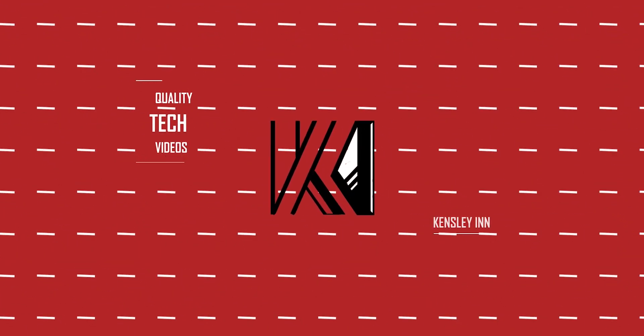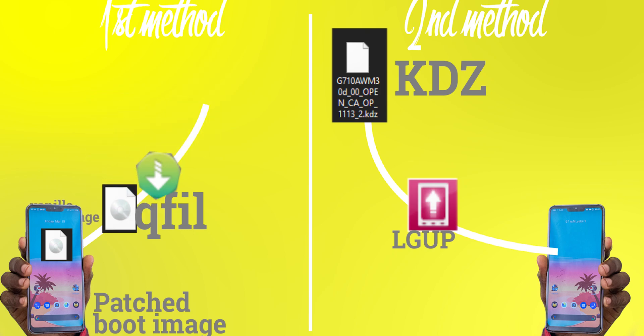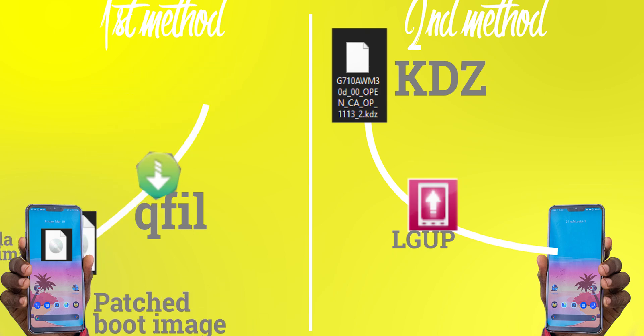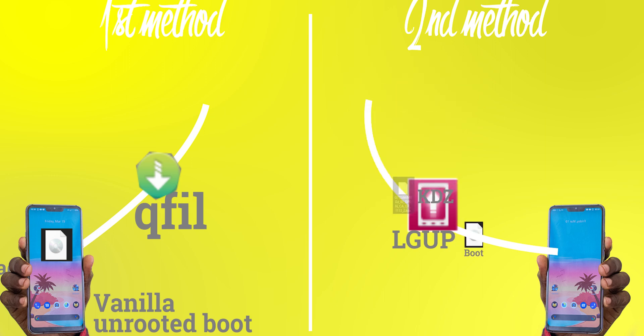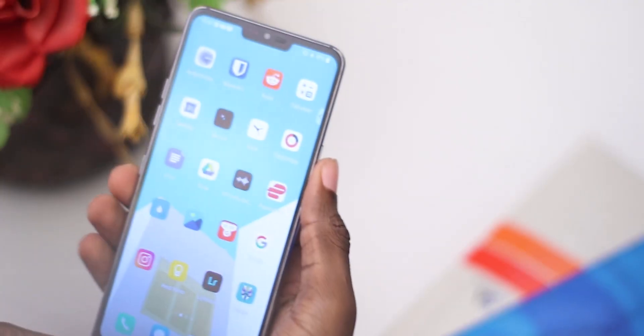I want to thank DTR for suggesting this video. Whether you're using stock or a custom ROM, let's get started. With the first method we are going to flash any previously saved boot partitions, and with the second method you download the latest firmware you're using and then flash the boot partitions using partition DL.